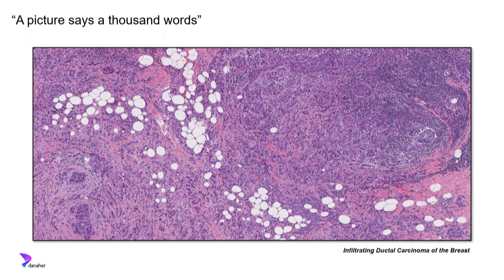You can see the complete loss of the normal ductal breast architecture, the tumor cells coursing through the center of the image surrounding and infiltrating the fat, and the dense inflammatory infiltrate — particularly in the upper right-hand side — suggestive of quite a vigorous immune response to the tumor. The point is there's a tremendous amount of information in this histopathology image available for deeper analysis.